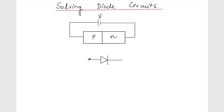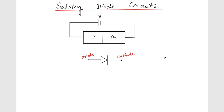This symbol represents the PN junction. This is the P side and this is the N side. The naming used for these two terminals: this terminal is called the anode and this terminal is called the cathode. This name has come from vacuum tubes — before the introduction of PN junction or semiconductor-based diodes, there used to be vacuum tubes.